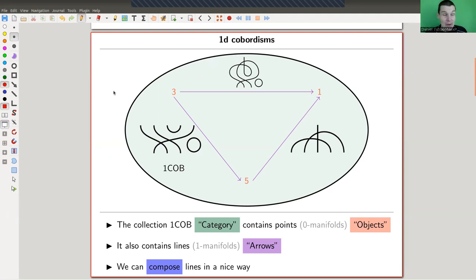So here's the picture. I have my bubble here, my universe of cobordisms, the category of one-dimensional cobordisms. I have zero-dimensional cobordisms, which are just points. So here are three, and I have five, and I have a map from three to five, which is a collection of lines connecting them.